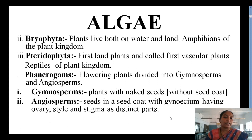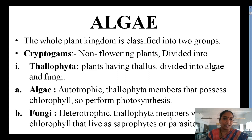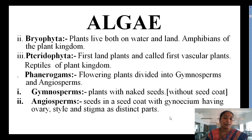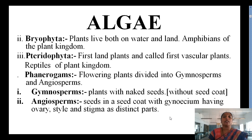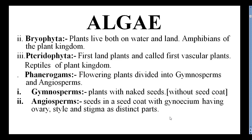Next is Bryophyta, followed by Pteridophyta. Thallus-like plant bodies — Algae and Fungi — are found in Thallophyta, and Bryophyta and Pteridophyta are the remaining Cryptogams. Bryophytes live both on water and land, hence called Amphibians of the Plant Kingdom. Pteridophyta are the first land plants and also the first vascular plants, because xylem and phloem are first formed in Pteridophyta. Hence, these are also called reptiles of the Plant Kingdom.